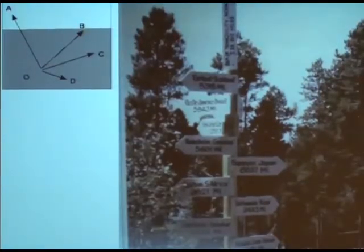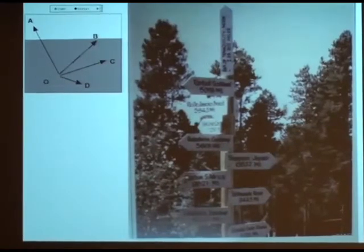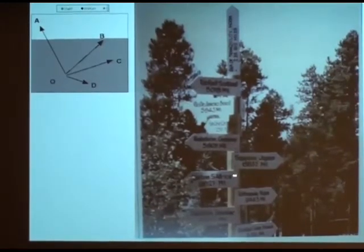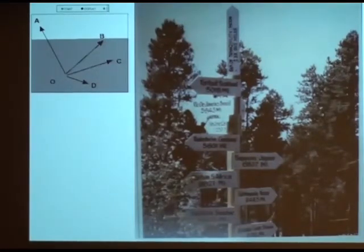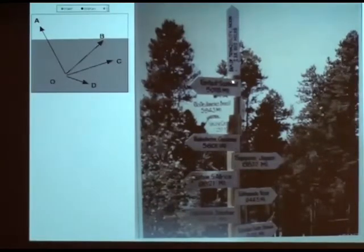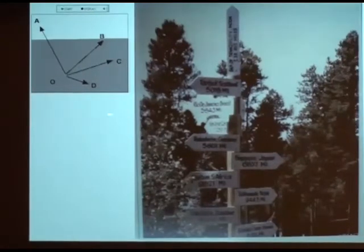This vector math is based on the definition of what vectors do as a mathematical object. Vectors are like arrows that tell you the direction you need to go and how much you need to travel. For example, Japan is 6,700 miles away in this direction; Scotland is 5,000 miles in another direction; and Kathmandu, Nepal is 10,000 miles in yet another direction. These vectors tell you both the direction and the magnitude.